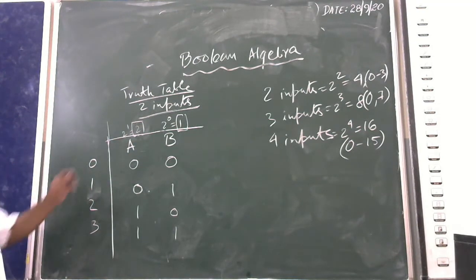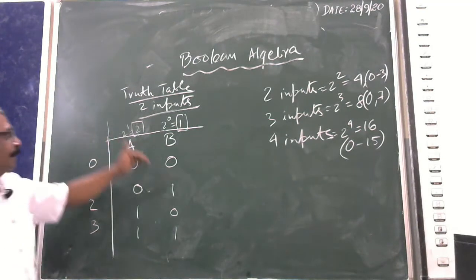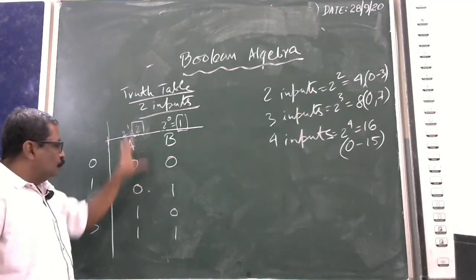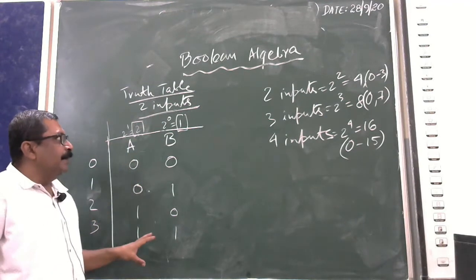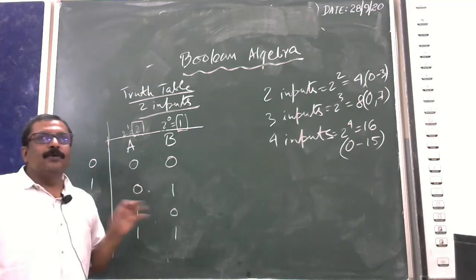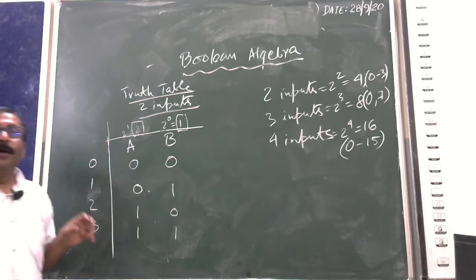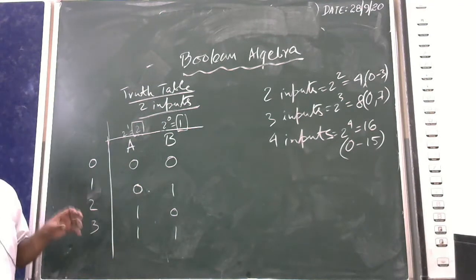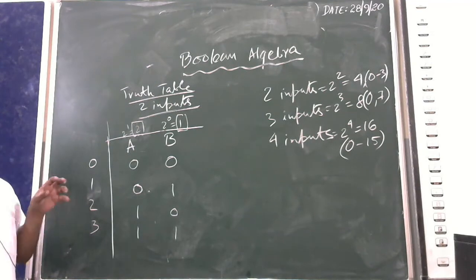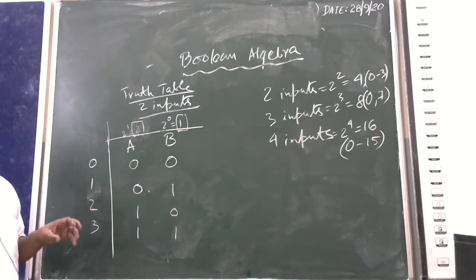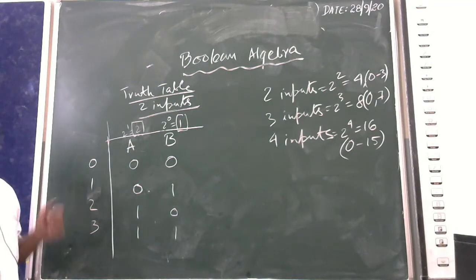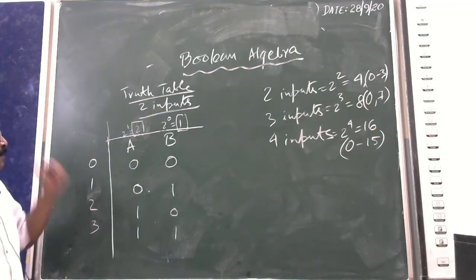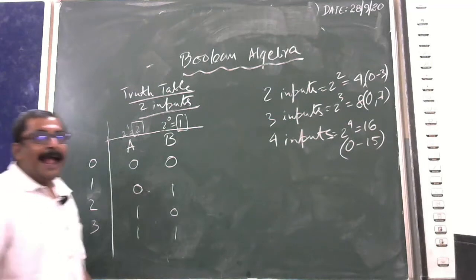After drawing the truth table, the next question is which gate to apply. So first we will do the AND gate.